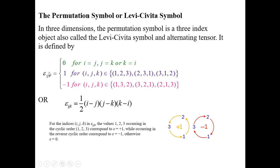How do we define it? Epsilon_ijk — its value is zero when any two indices are equal: i equals j, j equals k, or k equals i. That means when any two of the three indices are the same, epsilon_ijk equals zero. For the remaining cases, we explore when the value is +1 or -1.